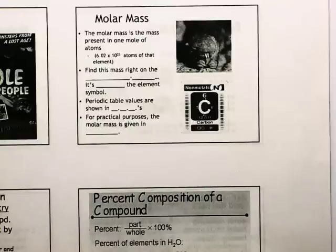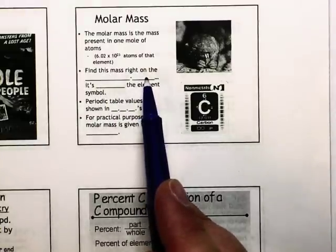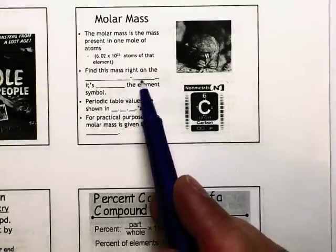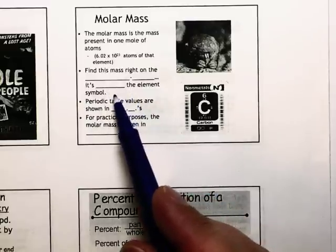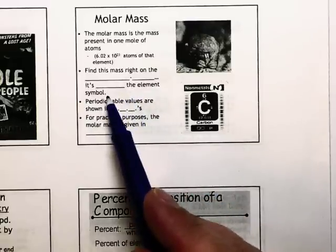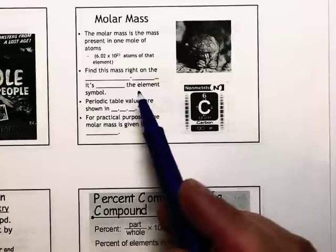Now, where do you find molar mass of something? We find it right on the periodic table. This is the number we haven't dealt with too much yet. But it's the number under the element symbol. So the next blank is under. It's under the element symbol.